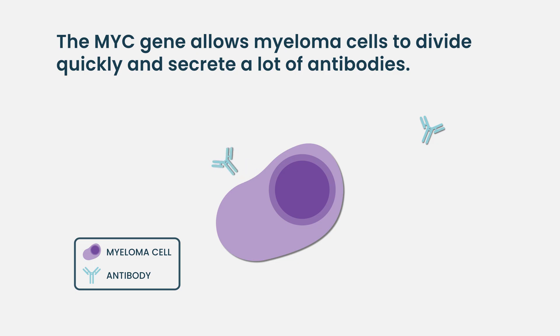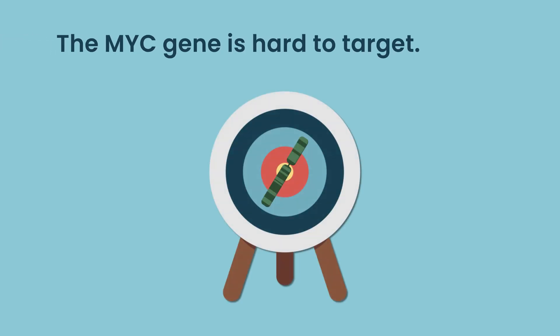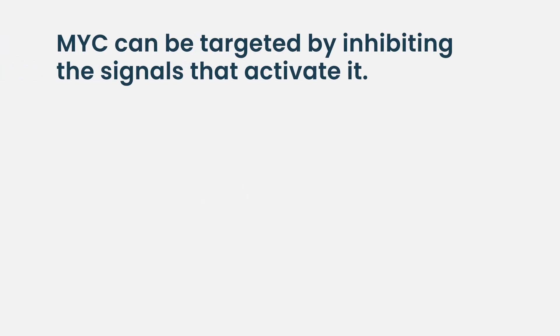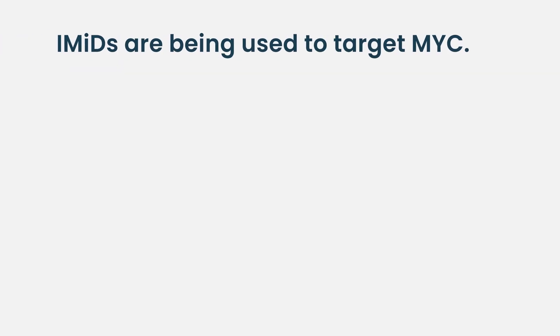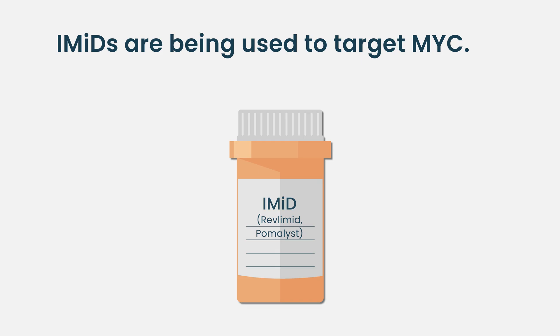MYC is a fundamental gene in all of cell biology and all of cancer biology. Unfortunately, it's not a gene that we can typically target with a drug, because it's located deep in the nucleus and it's not an enzyme like the kinases. However, we can perhaps turn off the signals that turn MYC on — and one of the ways we do that is with drugs like Revlimid, which inhibit a gene called Ikaros. Ikaros is a critical component that turns on MYC in myeloma patients.